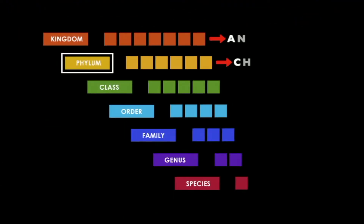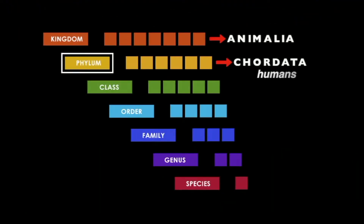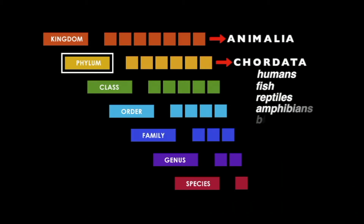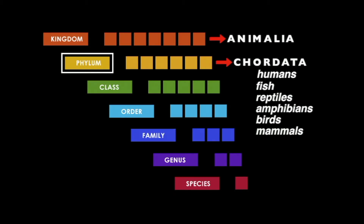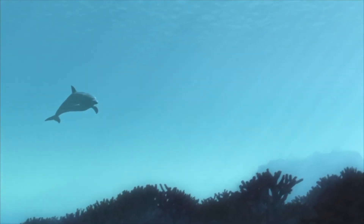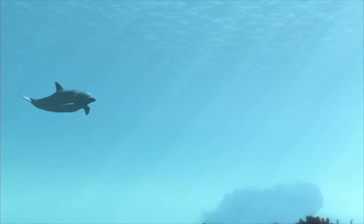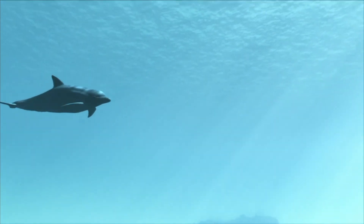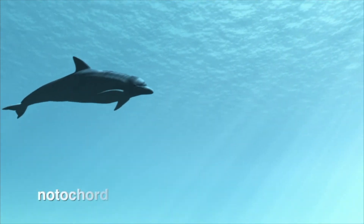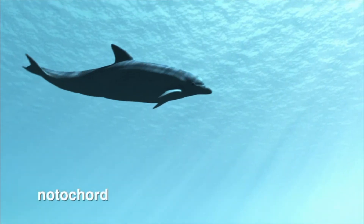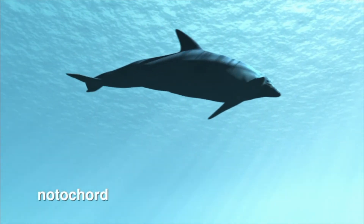Humans are found in phylum Chordata. This phylum also includes fish, reptiles, amphibians, birds, and mammals. All species within Chordata have the presence of a notochord, which is a flexible supporting rod on their dorsal side.